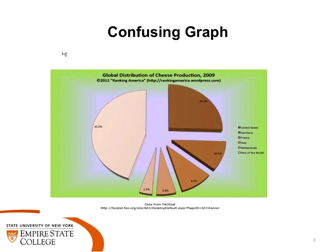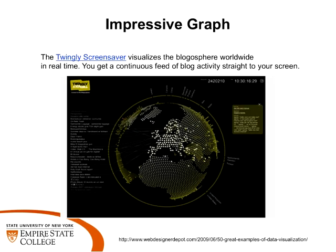The next graph was submitted as an impressive graph. The website is on the bottom because this is also difficult to read. It's called 'Great Examples of Data Visualization' — this particular one is a screensaver showing what's going on in blogs in real time. The site has a lot of very interesting visualizations of all sorts of data available from the internet, so you should take a look.